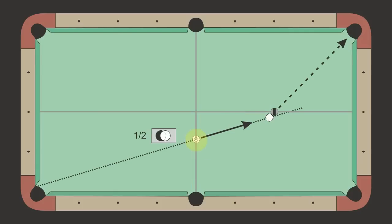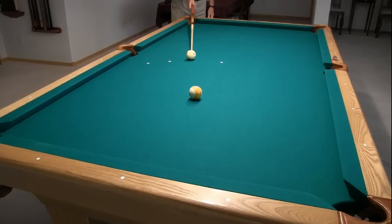For the half ball hit, the cue ball is located on a line through the edge of the object ball and the inner part of the corner pocket. At the table, you can use your cue to help sight this line, so you can place a donut at the cue ball position.